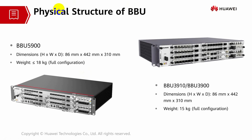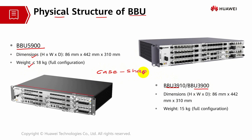Let's look through the physical structure of BBU. The BBU is basically a centralized unit that manages the overall system of a base station. We have varieties of BBU types — BBU 5900 series and BBU 3910 and 3900, each with its own dimension and weight. There are two types of BBU: the case-shaped BBU, which is what you're looking at here, and the integrated BBU, which is more suitable for an outdoor BBU and will be covered in the next slide.